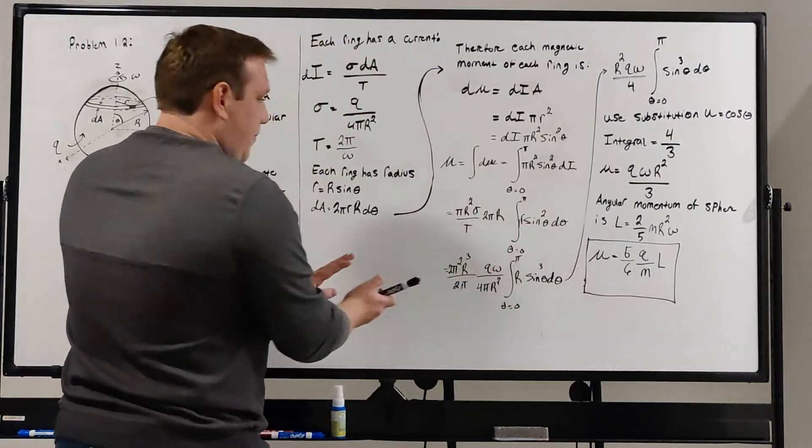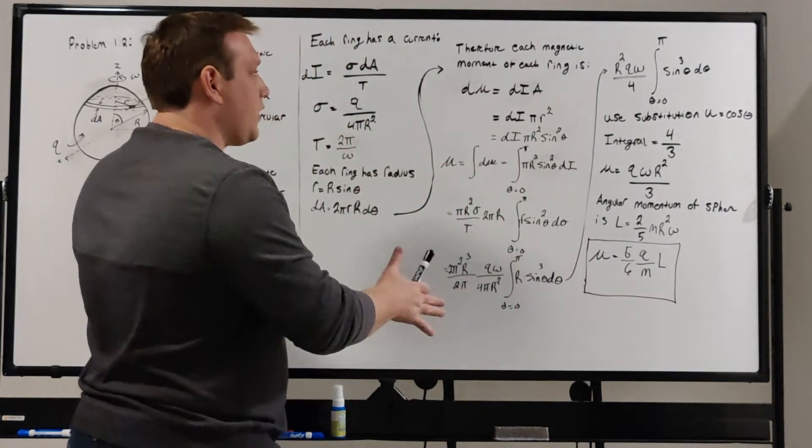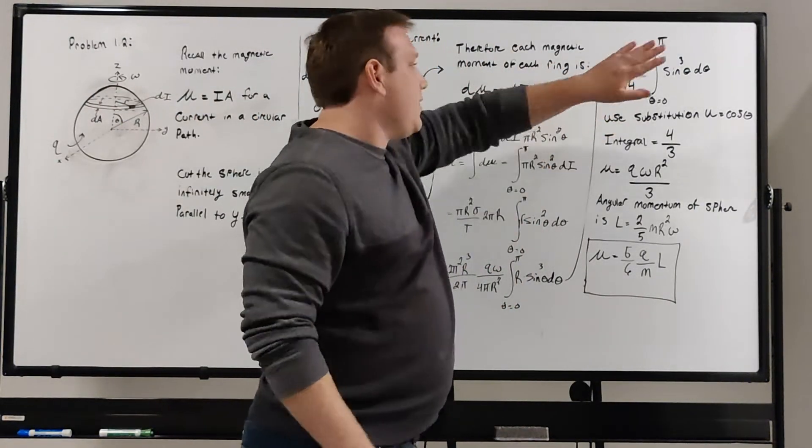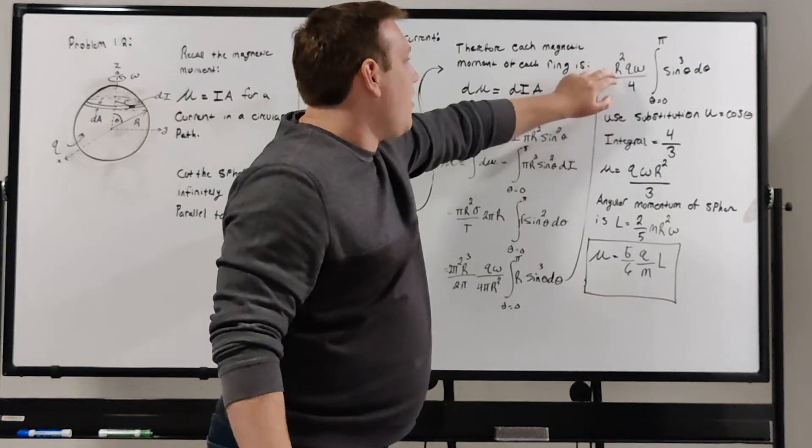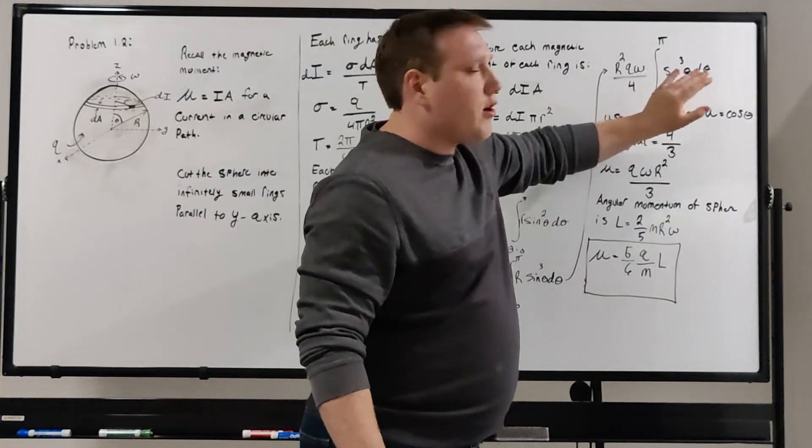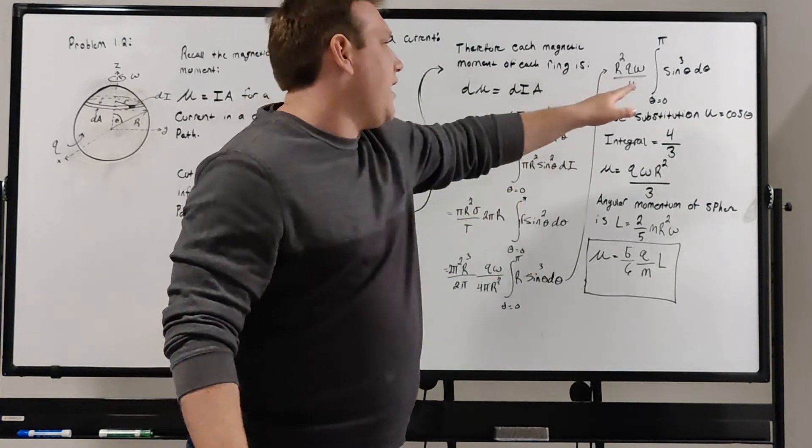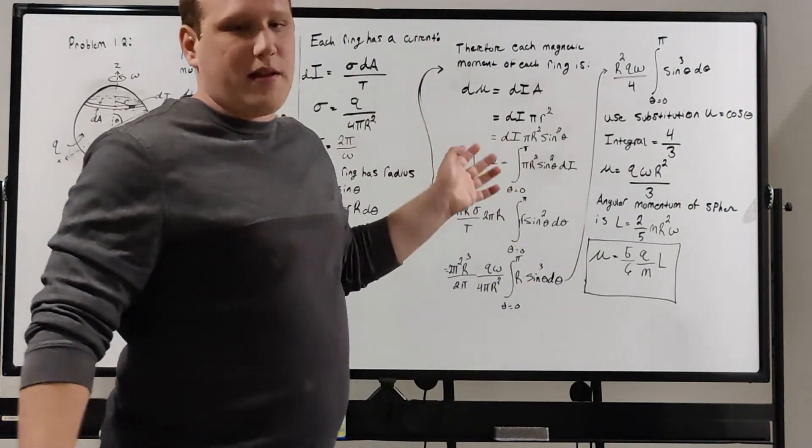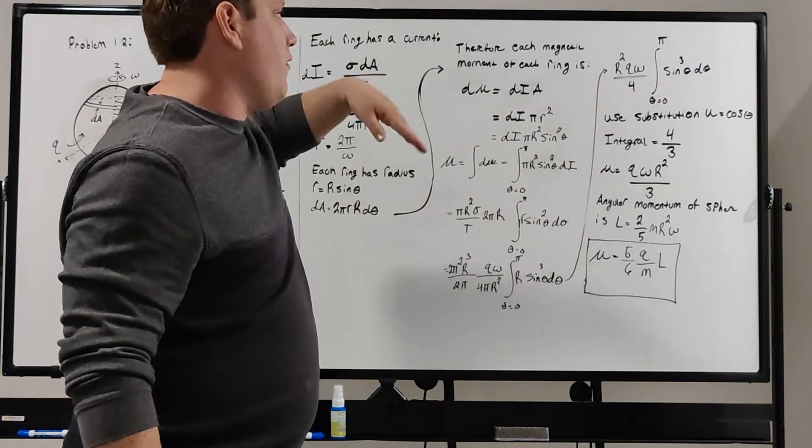Pulling big R out, canceling all those constants, we get a nice little constant R squared Q omega over 4, and then our integral just becomes the integral of sine cubed of theta d theta, with bounds of theta going from 0 to pi.